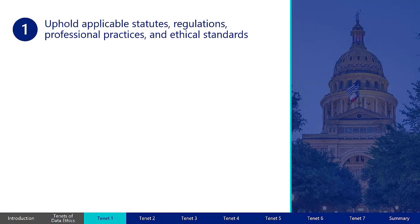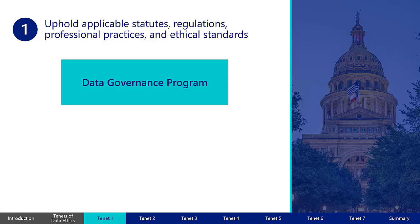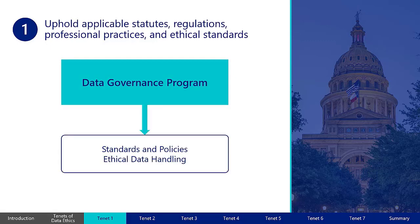The first tenet of data ethics is to uphold applicable statutes, regulations, professional practices, and ethical standards. Existing laws reflect and reinforce ethics. Therefore, information producers and consumers should adhere to all applicable laws and regulations, many of which are discussed in the Texas Data Literacy Program course on data privacy. Each organization's data governance program should establish its own standards and policies regarding the ethical handling of data specific to the organization.